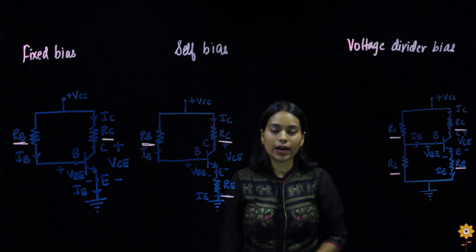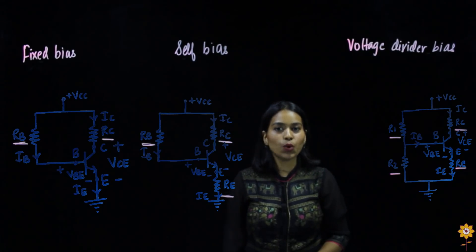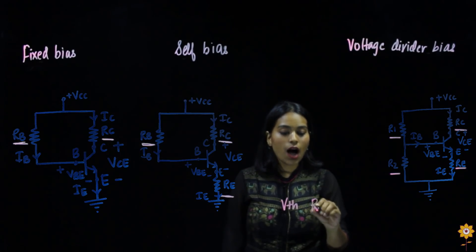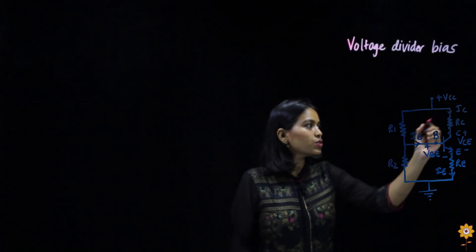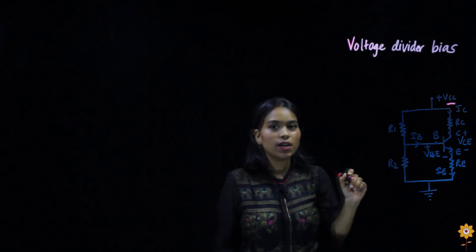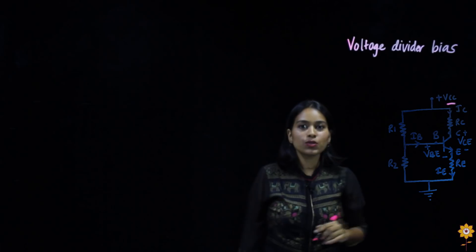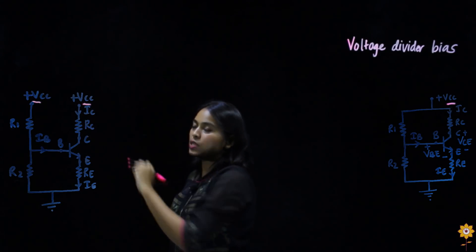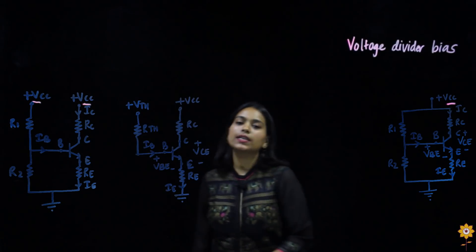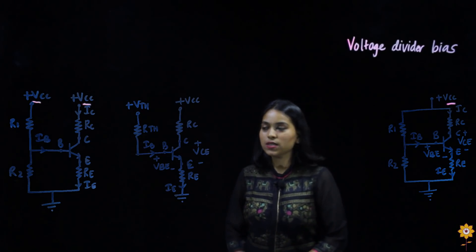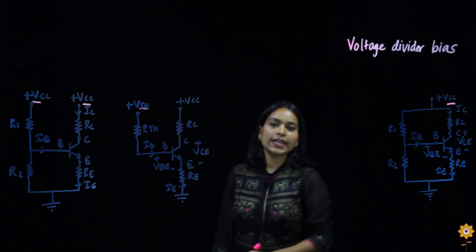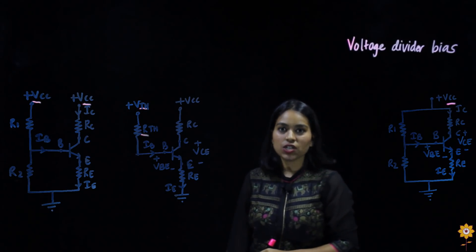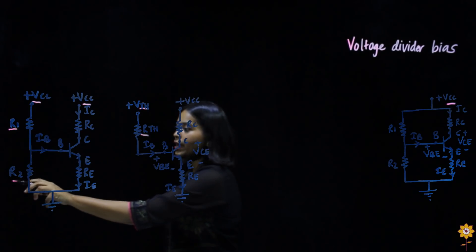We can simplify the diagram by applying Thevenin's theorem. When we apply Thevenin's theorem there are two components to find: Thevenin's voltage Vth and Thevenin's resistance Rth. The external DC voltage Vcc is common between two points, so we can redraw this circuit by drawing Vcc separately at both points. This is the Thevenin's equivalent circuit for voltage divider bias, where we have Vth in place of Vcc, and Rth as the equivalent Thevenin's resistance replacing R1 and R2.